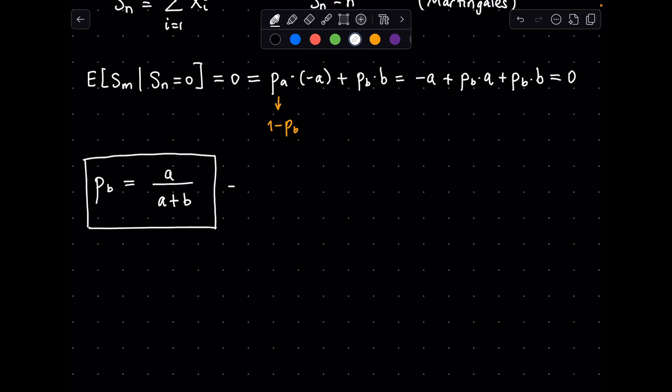From here, we find that p_b is equal to a divided by a plus b. And plugging in the numbers, we get 17% probability for the walk to end at the end of the bridge, before reaching the start. Also, from here, p_a is then b divided by a plus b.